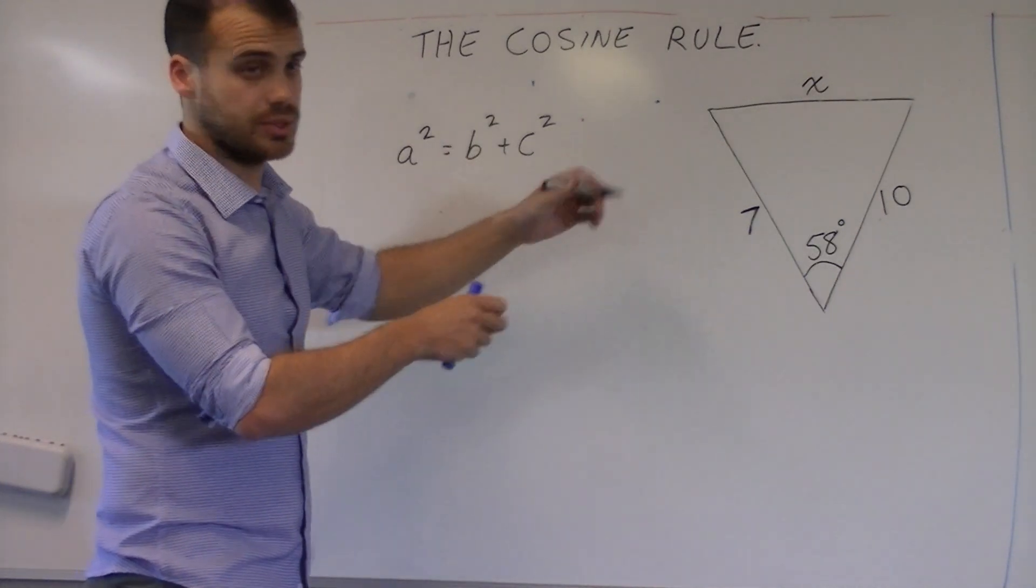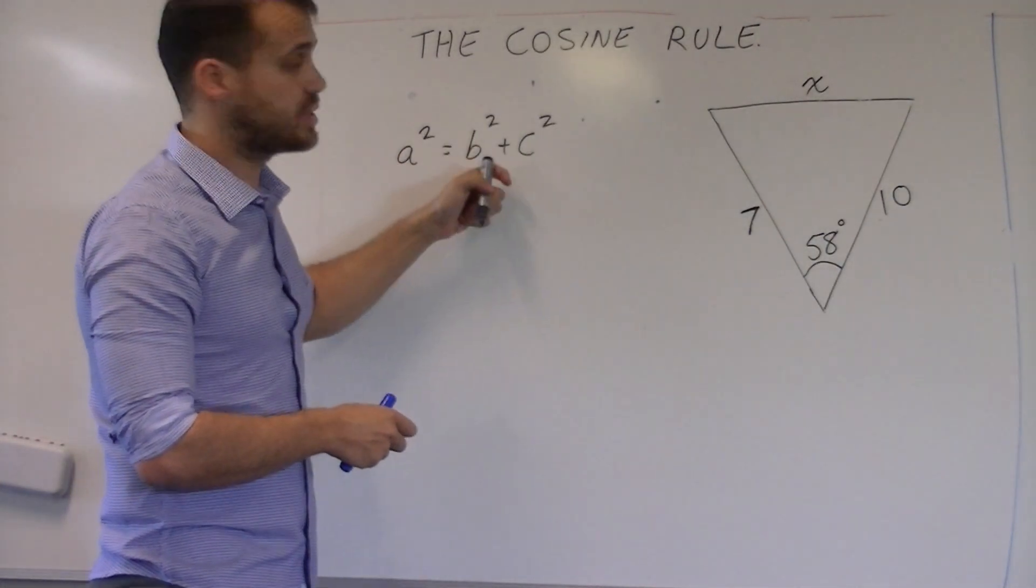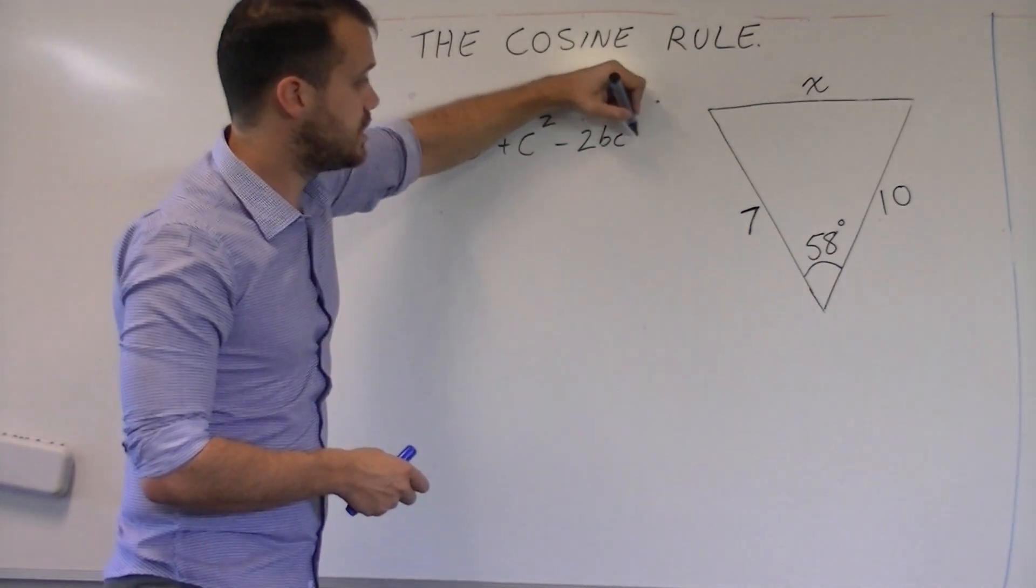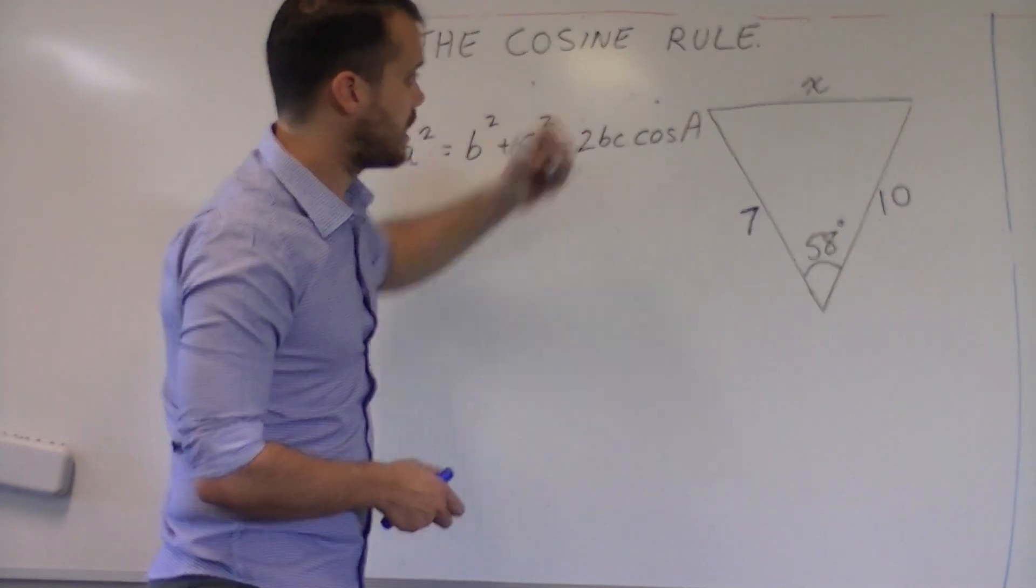But we need to add something onto the end of that. a squared equals b squared plus c squared minus 2bc cosine a.